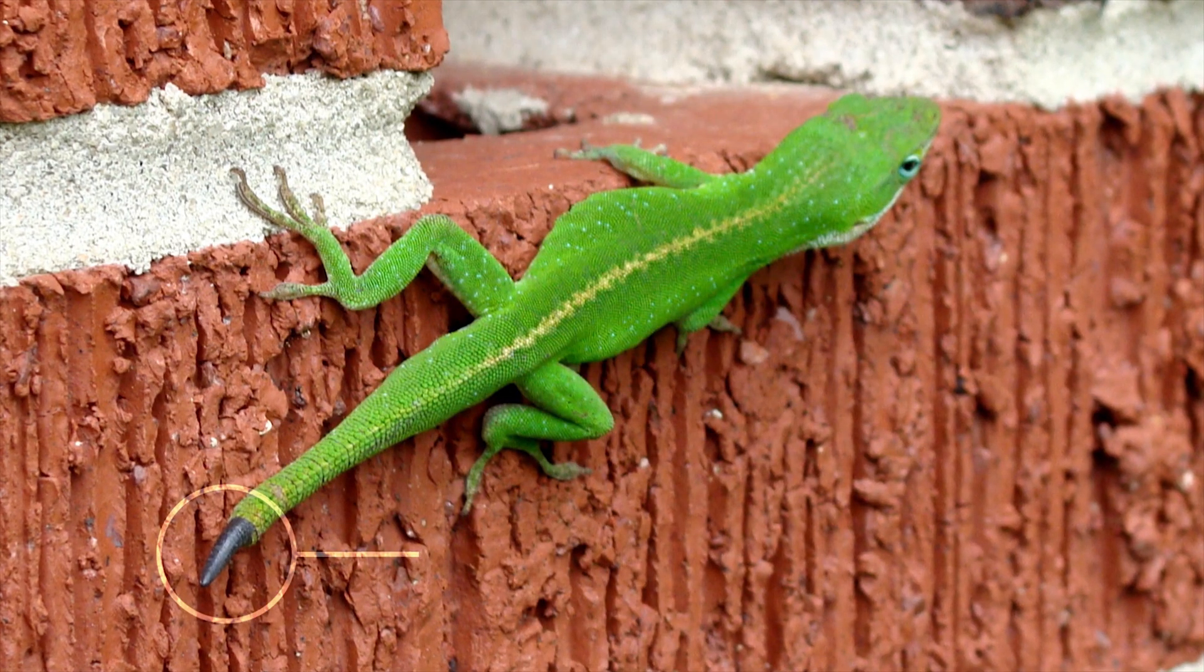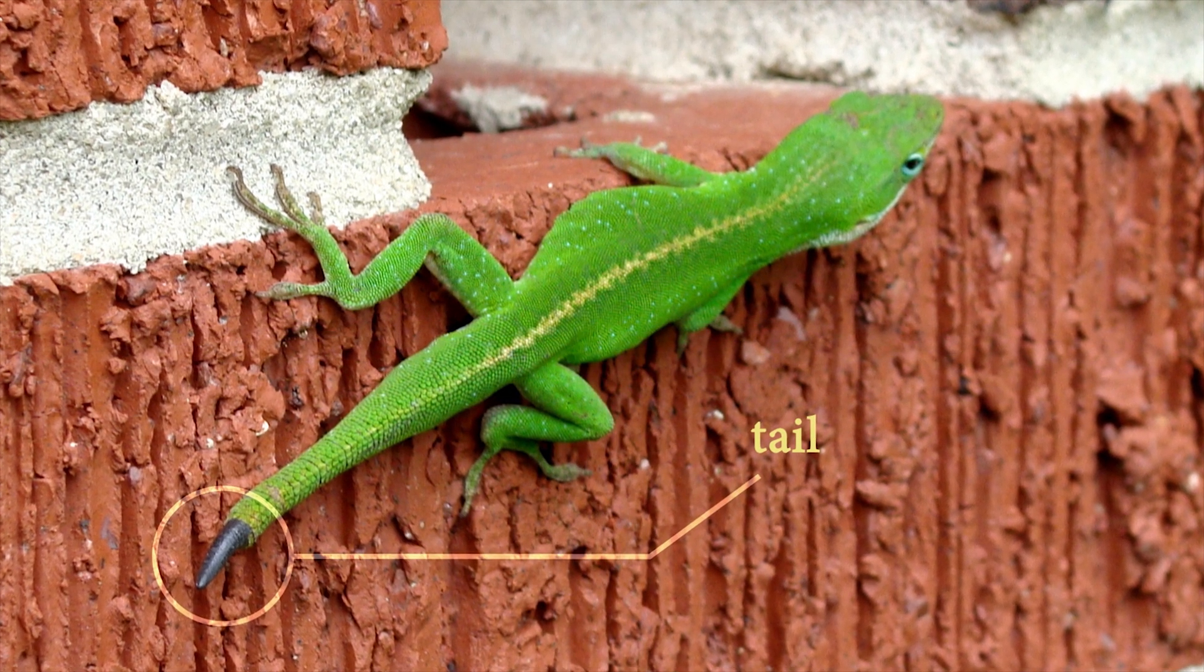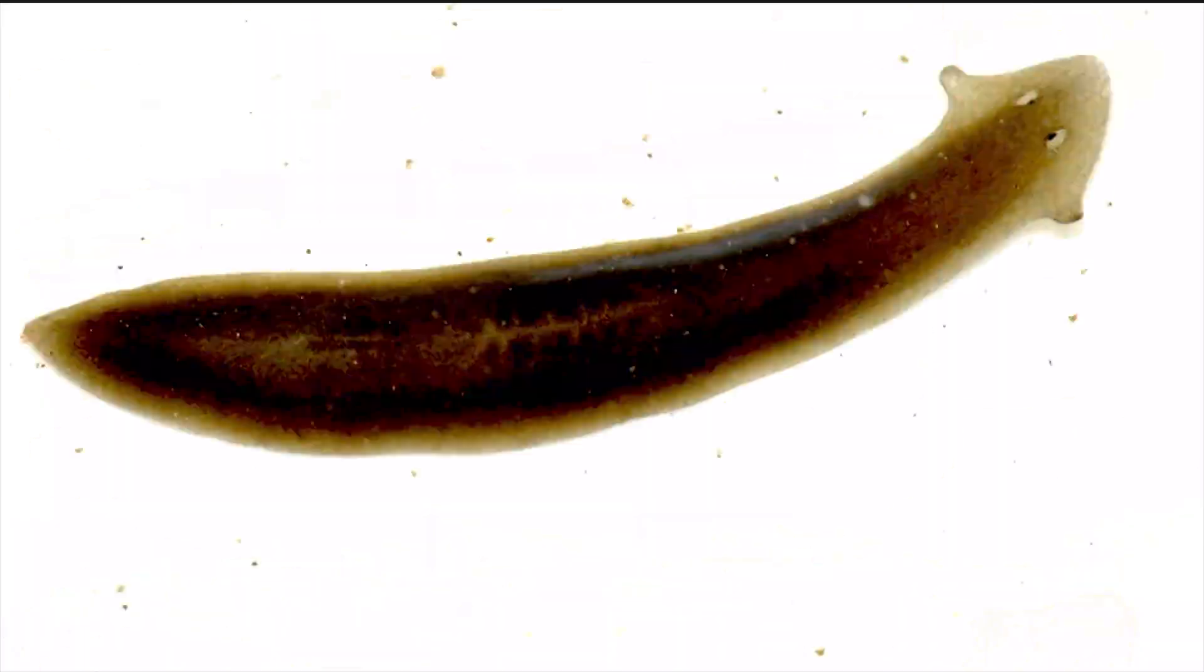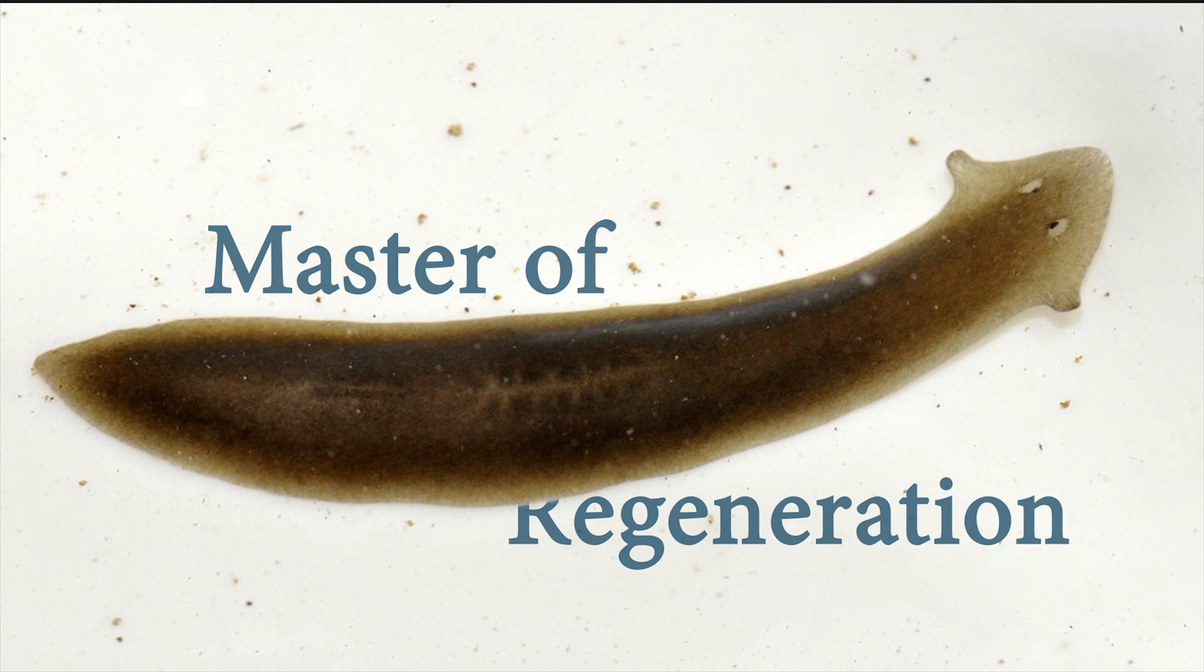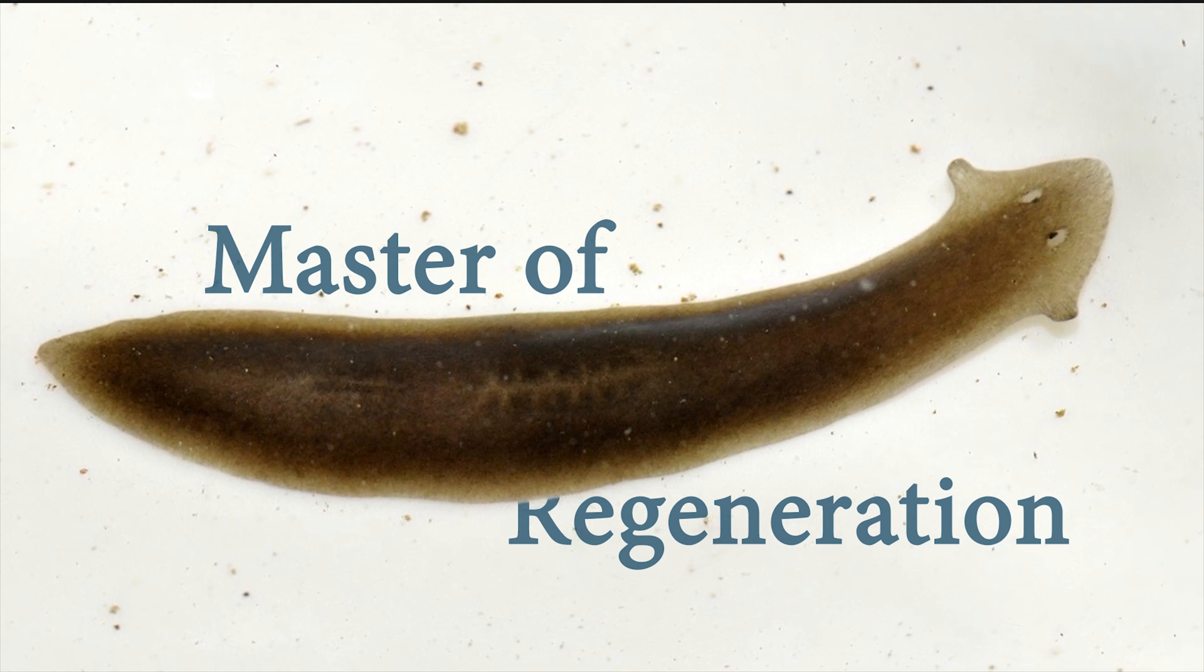Lizards lose their tail as a defense mechanism and regrow it. The freshwater flatworm planaria are the true masters of regeneration. Cut one into two and you've got two new flatworms.